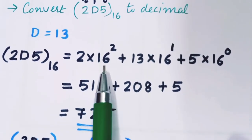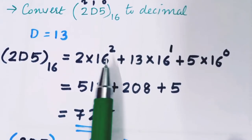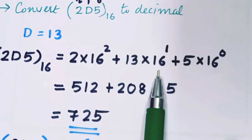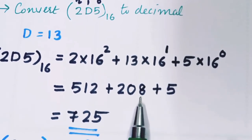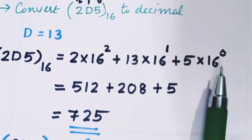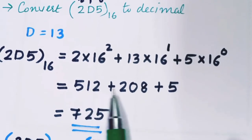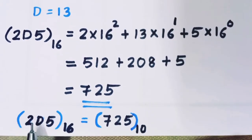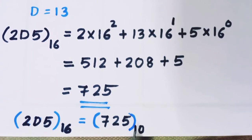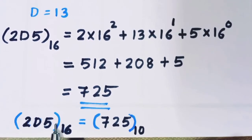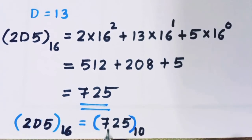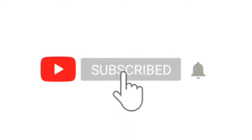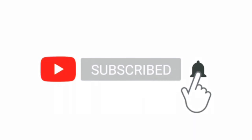Now let's calculate: 16 raise to 2 = 256, and 256 × 2 = 512. 16 raise to 1 = 16, and 13 × 16 = 208. 16 raise to 0 = 1, and 5 × 1 = 5. Adding: 512 + 208 + 5 = 725. So 2D5 in Base 16 is equal to 725 in Base 10.